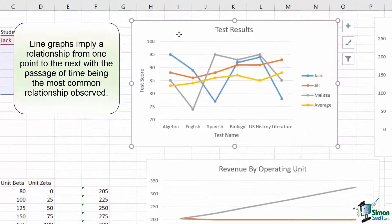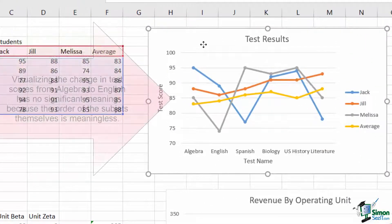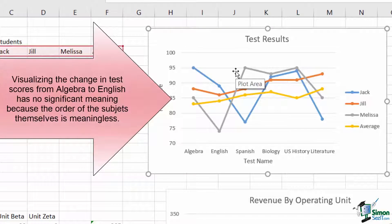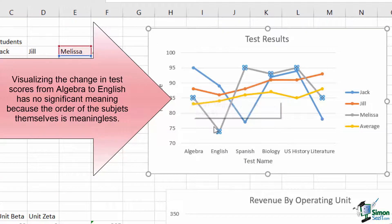For example, when we look at our test results in a line chart format, it doesn't make much sense, and it doesn't assist us in making any conclusions, as there's no real relationship when going from algebra to English or from biology to U.S. history.